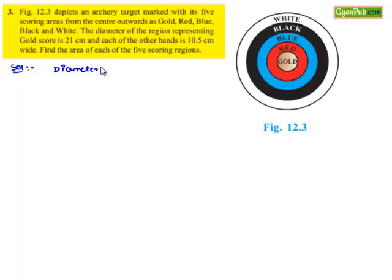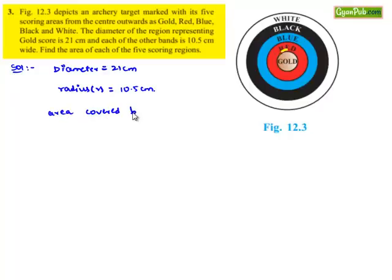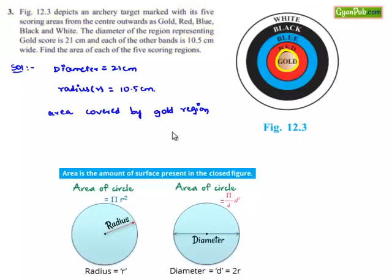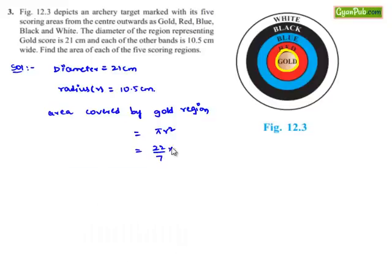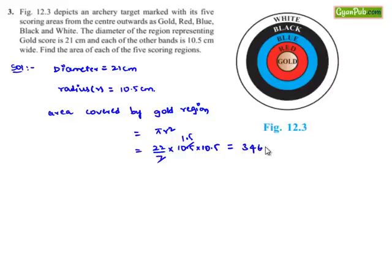Moving on to the solution: the diameter of the gold scoring zone is 21 cm, so the radius is 21/2 = 10.5 cm. The area covered by the gold zone = πr² = (22/7) × 10.5 × 10.5. Here 7 goes into 10.5 giving 1.5 times, so the area = 22 × 1.5 × 10.5 = 346.5 cm². Therefore the area covered by the gold zone is 346.5 cm².